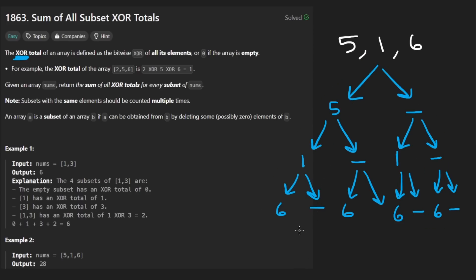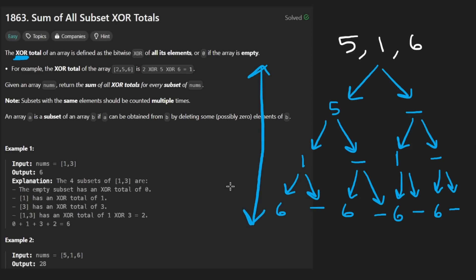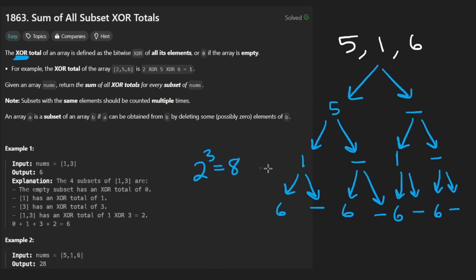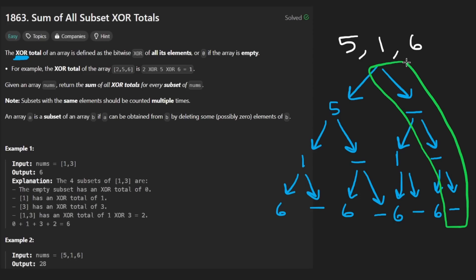If you count all of these you're going to see we have 8. The reason is we branch by 2 every single time. The height of this decision tree is 3, therefore we get 2 to the power of 3, which is 8 different subsets. One interesting one is where we literally didn't include any element — that actually does technically count as a subset.